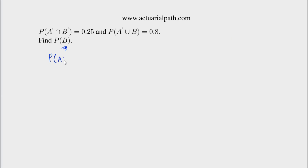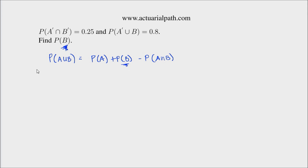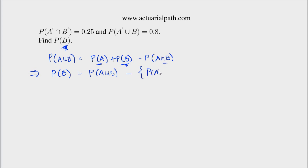The probability of A union B equals the probability of A plus the probability of B minus the probability of A intersection B. Since the question is to find P(B), I want to make it the subject. Therefore, the probability of B equals P(A union B) minus P(A) minus P(A intersection B).